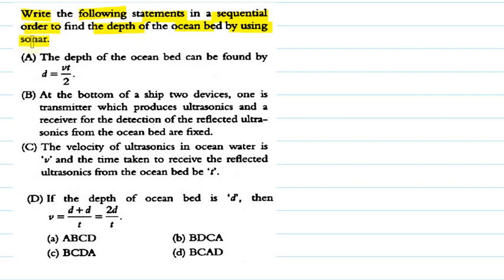We have to use sonar to find the depth of the ocean bed, and the statements are given — we have to arrange them in sequential order. Let us see Statement A: the depth of ocean bed can be found by D equals Vt divided by 2.